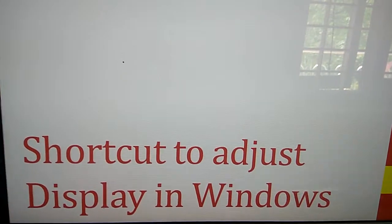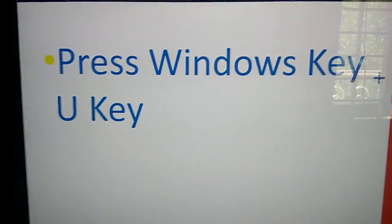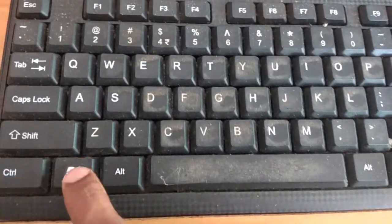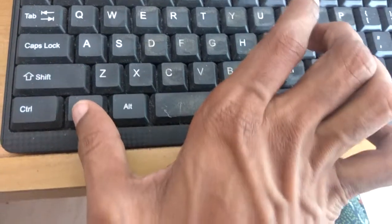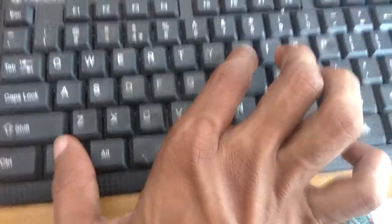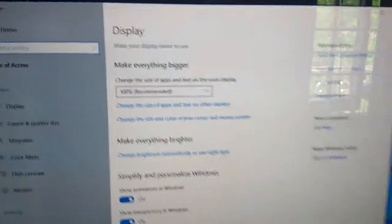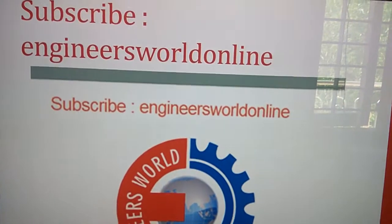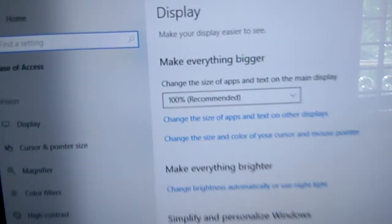To adjust the display in Windows, simply press the Windows key and the U key together. This will automatically open the display settings window. Remember, in Windows versions, pressing the Windows key and the U key together will bring up the display settings where you can adjust the display however you want.